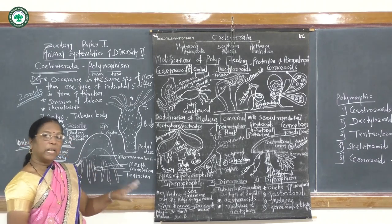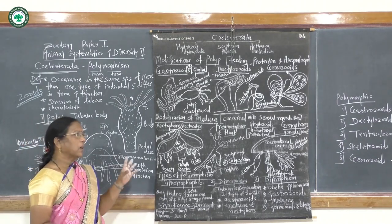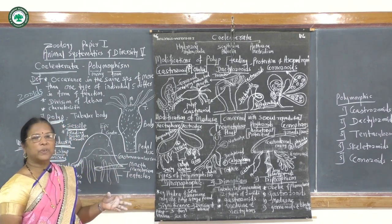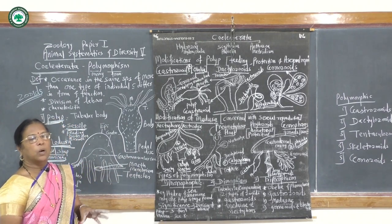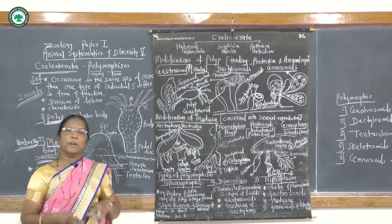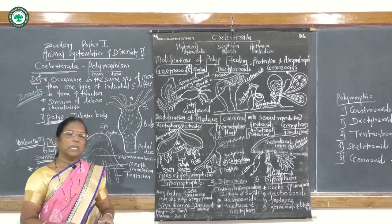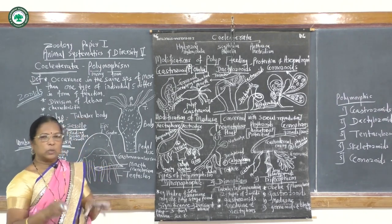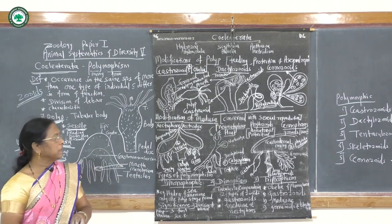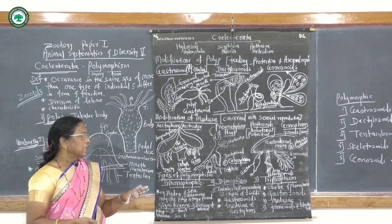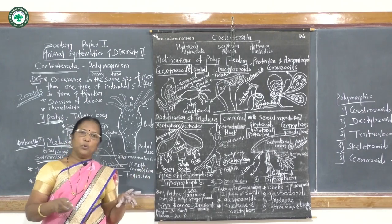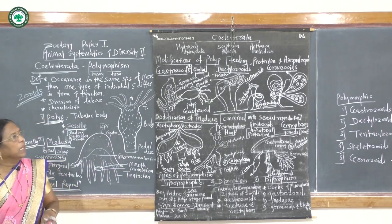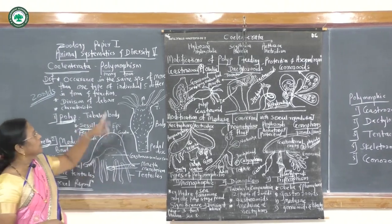If more than three to four forms are present, they are called polymorphism — numerous individuals come together to form the colony for different functions with division of labor, like the honeybee caste system. Hence, the occurrence of numerous individuals for performing different duties is called polymorphism.